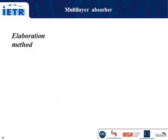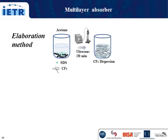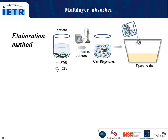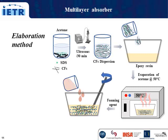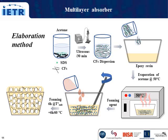I present here the elaboration method of the ultralight epoxy foam. First, we start with the pre-dispersion of carbon fibers of 12 mm length. These fibers are added to a solution of acetone and SDS, which is a chemical dispersant, after which ultrasound is applied to disperse these fibers. Then, the dispersed fibers are added to the epoxy resin. The whole mixture is put in the oven to evaporate the acetone down to the desired amount remaining in the mixture. Then, the foaming agent is added and mixed with a spatula, and this mixture is left at room temperature for 6 hours to finalize the foaming step, then at 60 degrees to finalize the polymerization. Finally, the foam is cut to be characterized.